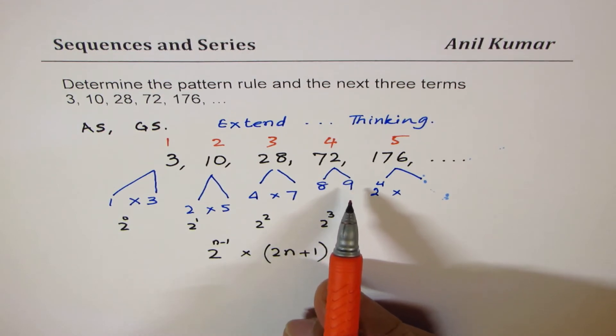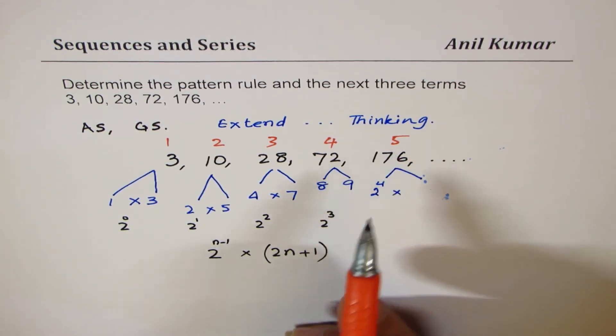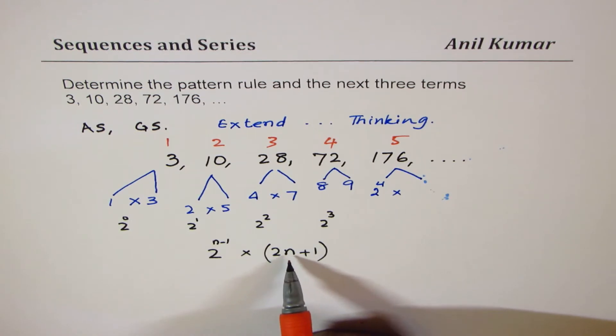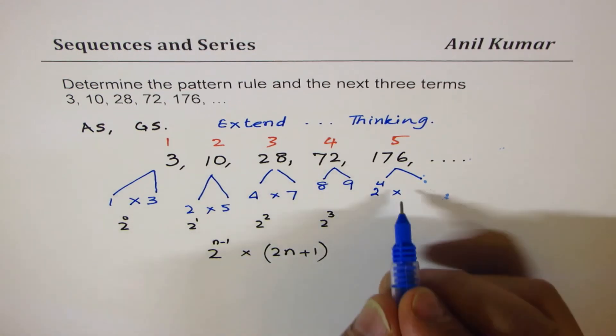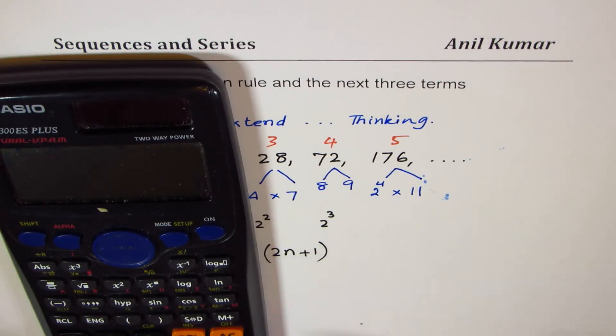So 2 to the power, 2 times 5 is 10, 10 plus 1 is 11. So 2 to the power of 4 times 11. Let's check this out. So 2 to the power of 4, which is 16, but let's write, as we have a pattern here, times 11. What do we get?